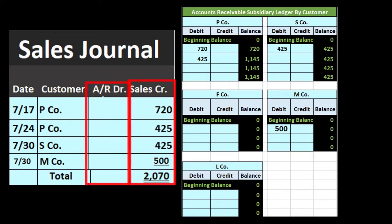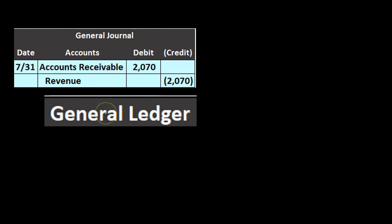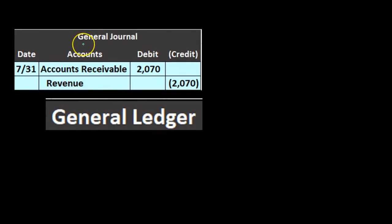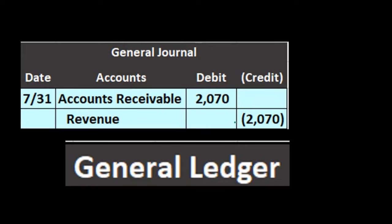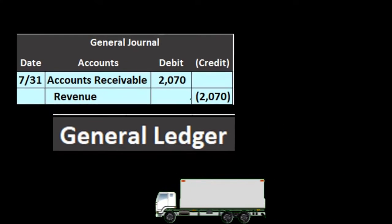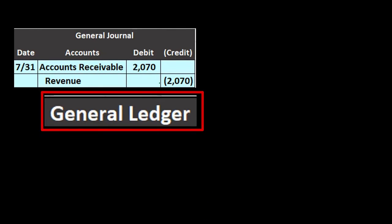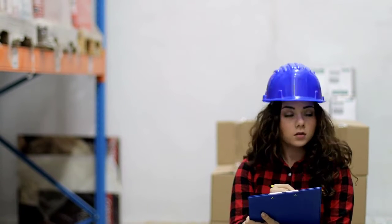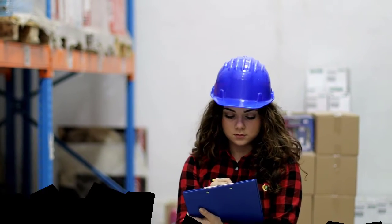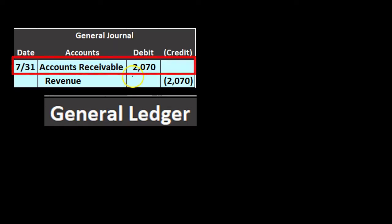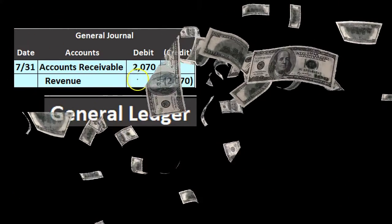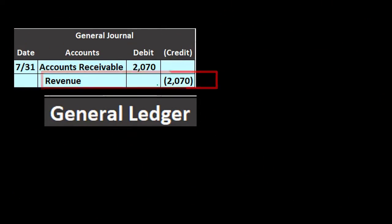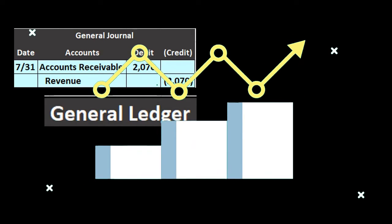Next we're going to take this entry and make our journal entry. We're going to debit accounts receivable and credit sales — that's our journal entry in the general journal, debiting accounts receivable for the total of 2,070 and crediting sales. In our case, dealing with a service company, we still call it a sales journal, but when we post to the general ledger we'll call it revenue, income, or fees earned. Accounts receivable has a debit balance, so we increase it with another debit. Revenue has a credit balance and typically only goes up in the credit direction, so we credit it.